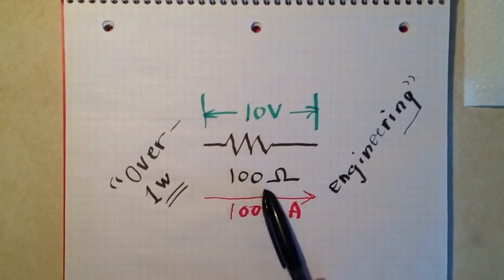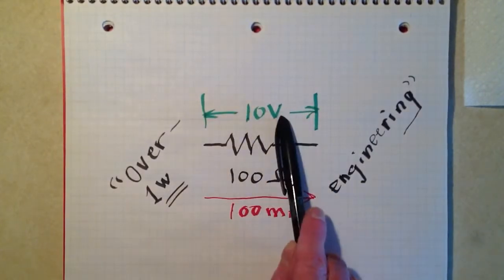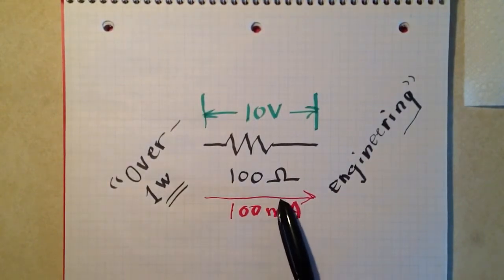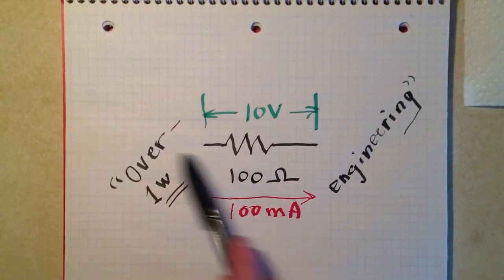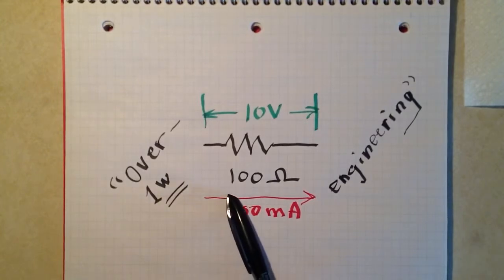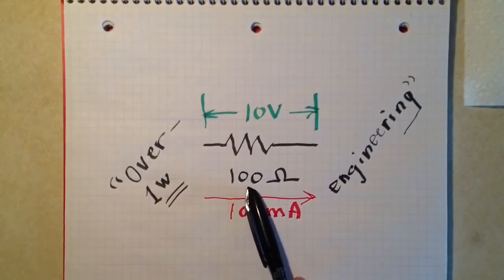So you'll get a resistor, 1 watt, 100 ohms. 10 volts will give you 1 watt. 100 milliamps through it will also give you 1 watt. And then I went on to say we ought to incorporate some kind of an over-engineering buffer. That really, we only ought to subject it to about 70% or so of its rating.